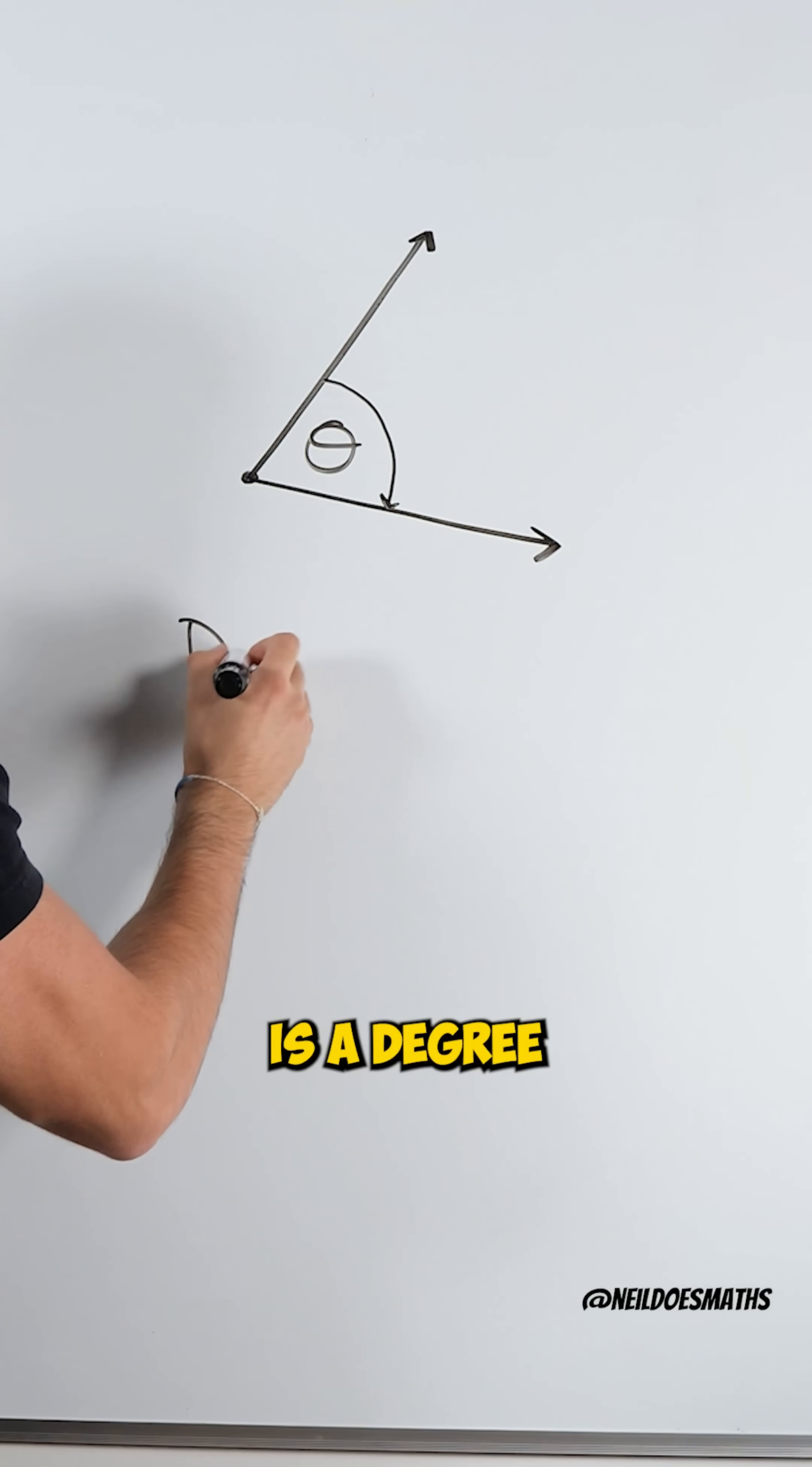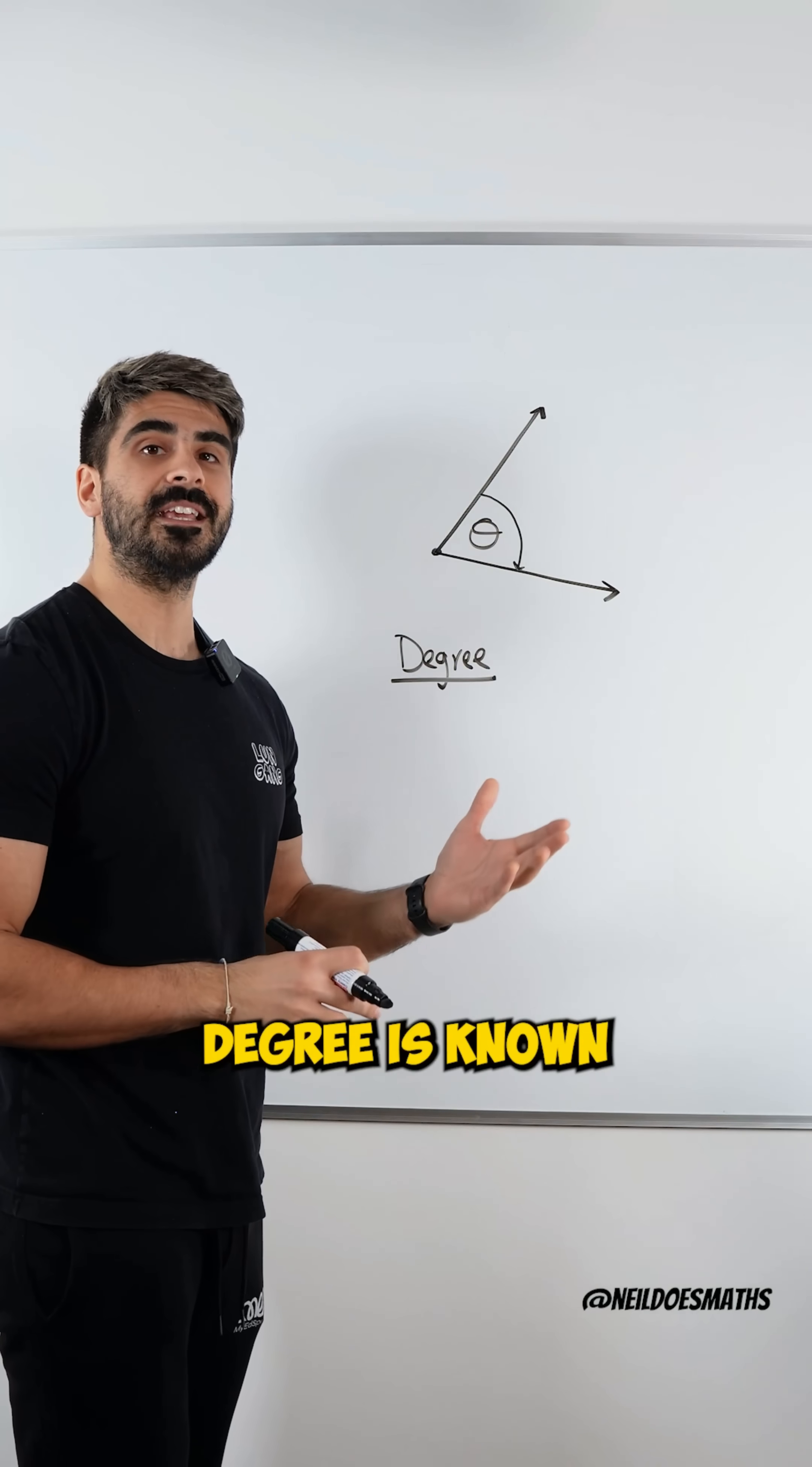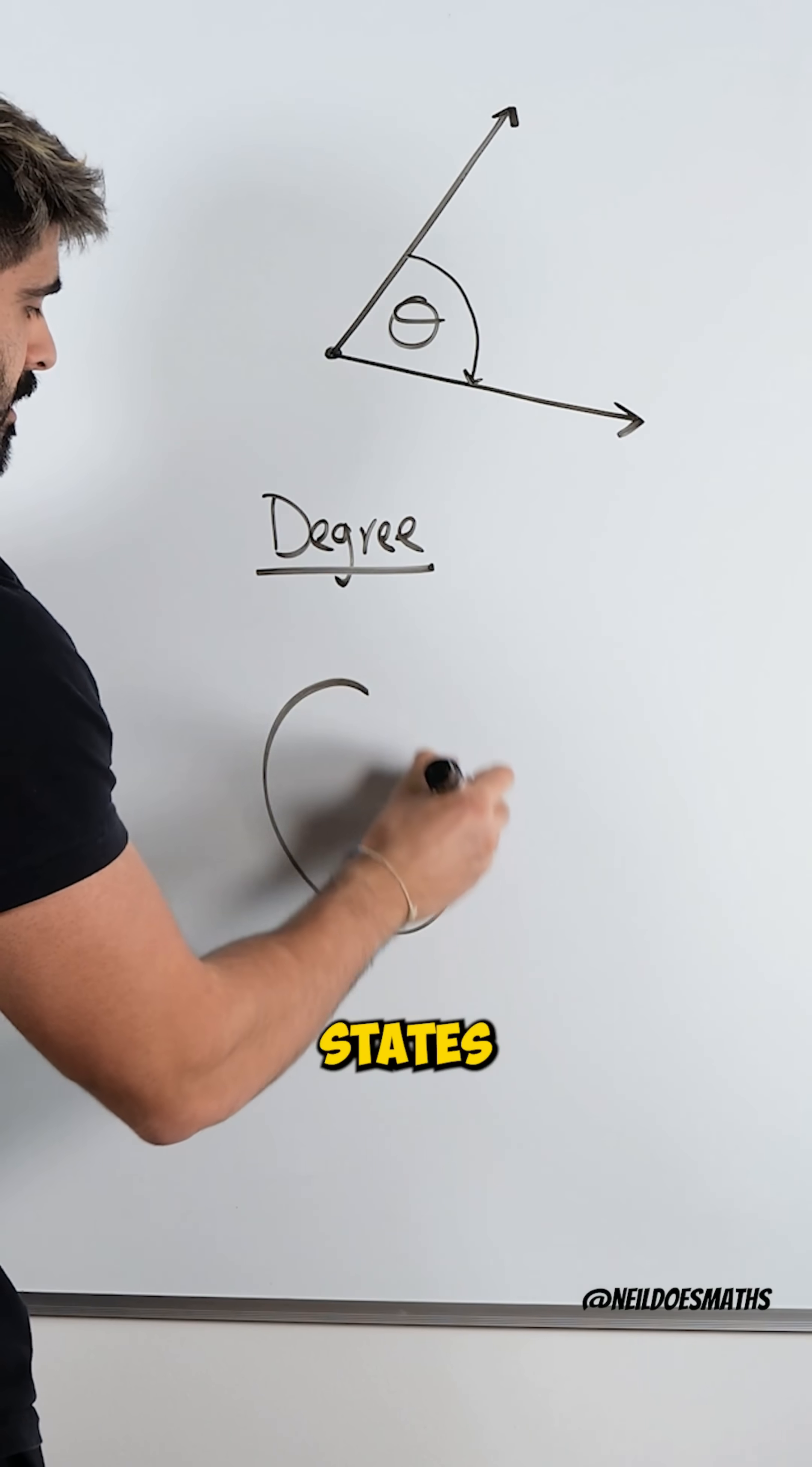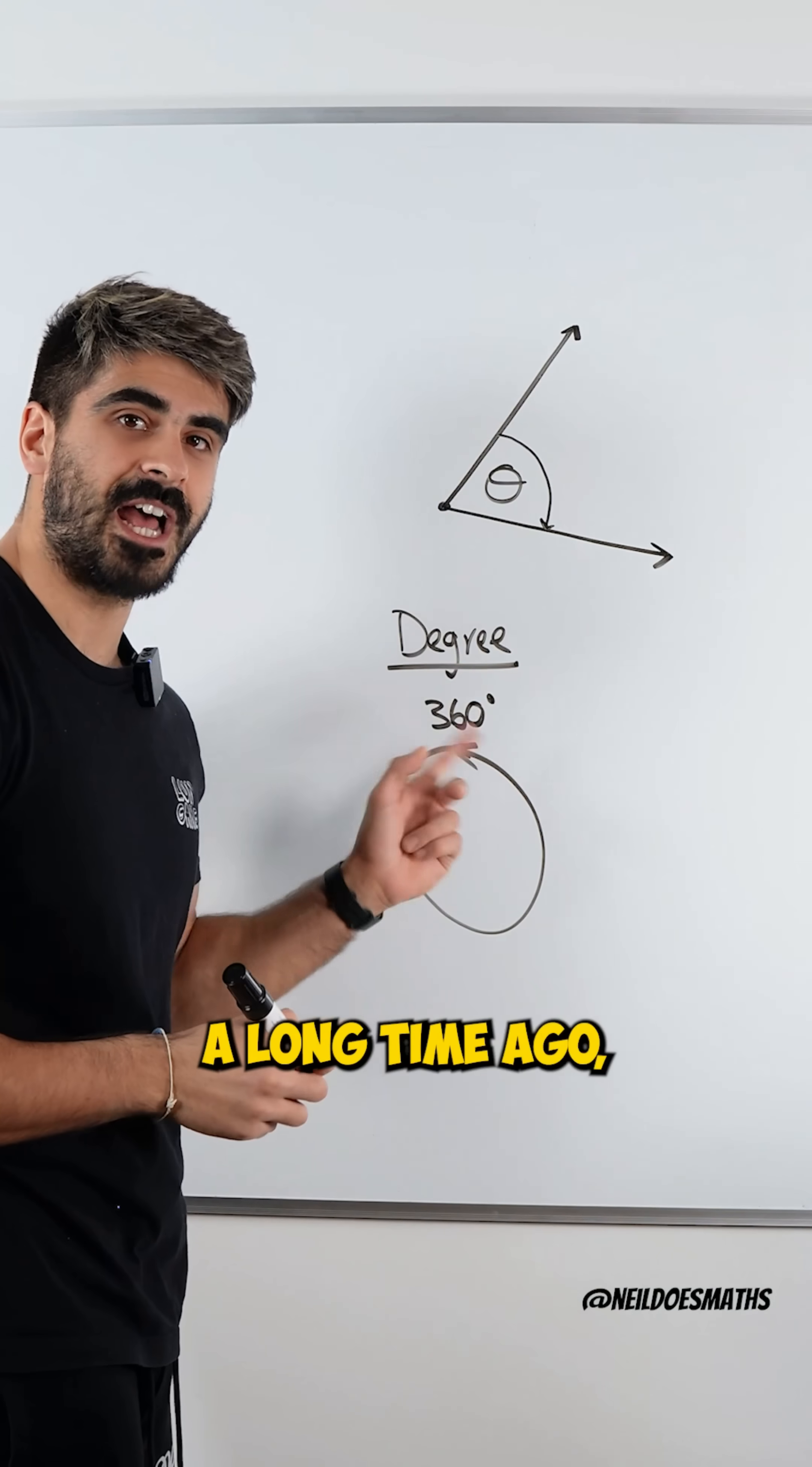The first one is a degree, probably the most common way that you guys are familiar with. Now a degree is known as a planar angle, which basically states a full circle is 360 degrees. And this was fixed a long time ago.